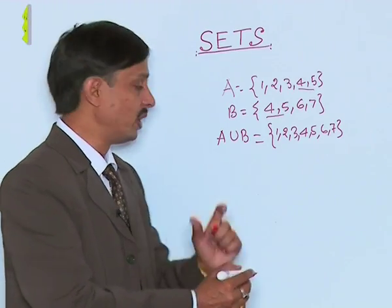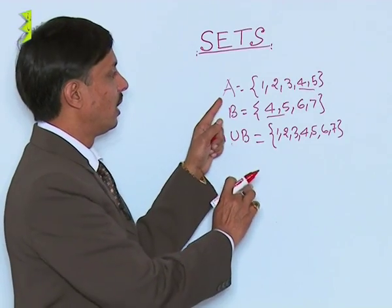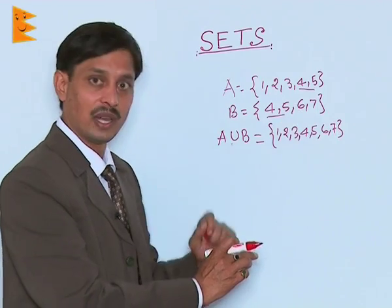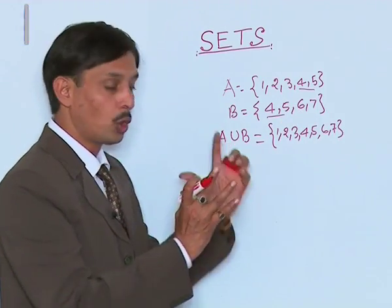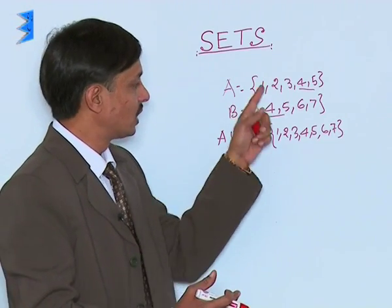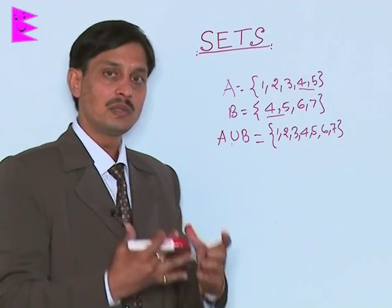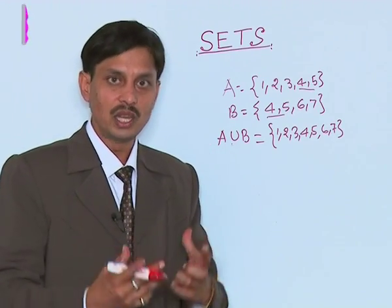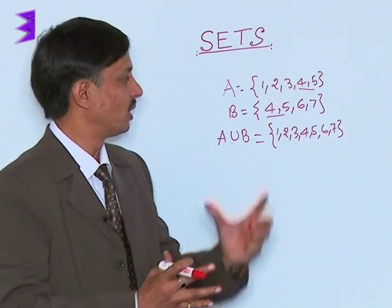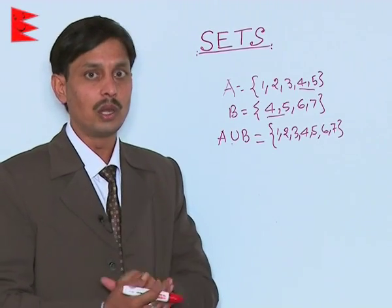The symbol for union is U. So if A = {1, 2, 3, 4, 5} and B = {4, 5, 6, 7}, then A union B means grouping and writing together the elements of both sets, giving us {1, 2, 3, 4, 5, 6, 7}. Ultimately, making the union means clubbing and joining all elements, keeping in mind that elements should not repeat.